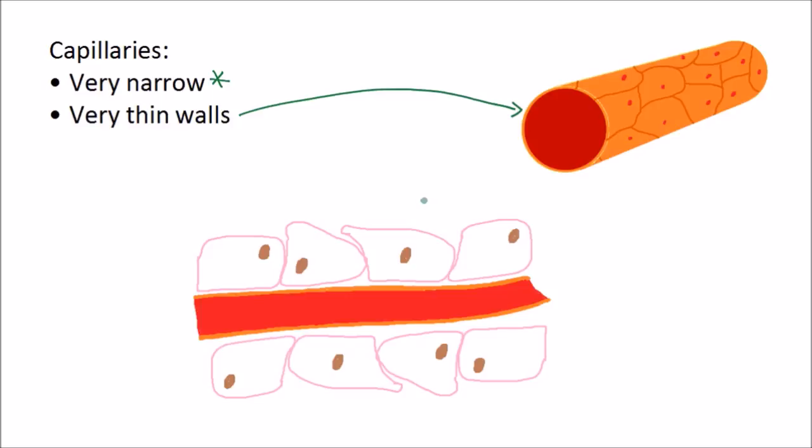So substances like glucose and oxygen will be able to diffuse out of the blood and into the cells where they are needed. Because the cell wall is so thin, those substances can simply diffuse through, and substances like carbon dioxide can easily diffuse out of the cells and into the blood.